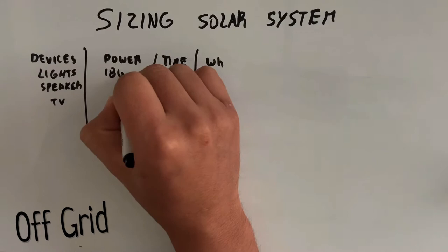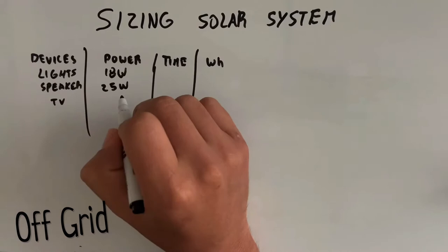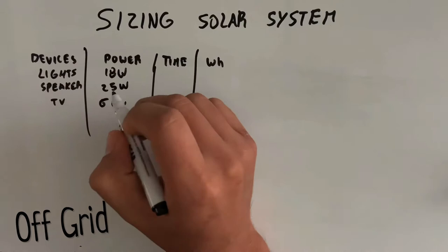Now that we have the numbers, we're going to write down 18 watts for the lights, 25 watts for the speaker, and about 60 watts for my 30 inch TV, small TV.